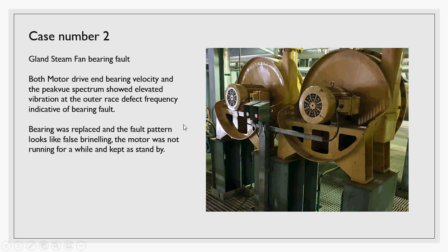Today I'm going to talk about this case of a Glant Steam Fan bearing fault. As you can see in the photo, we have two Glant Steam Fans — a motor direct coupled with the fan. One of the machines is running and the other one is kept on standby. What happened is the vibration kept being transmitted from the running machine to the standby one, causing this bearing defect problem.